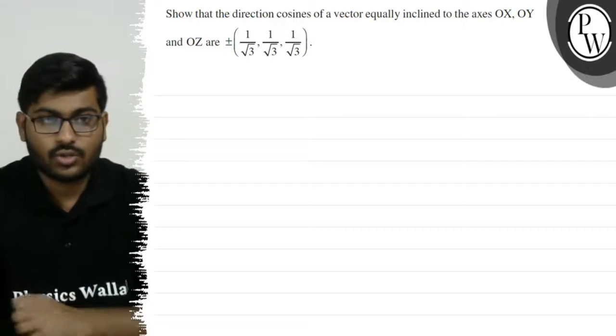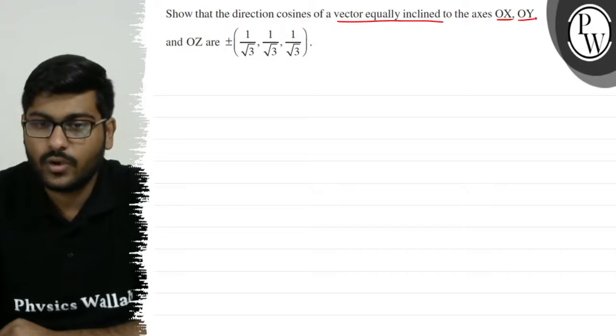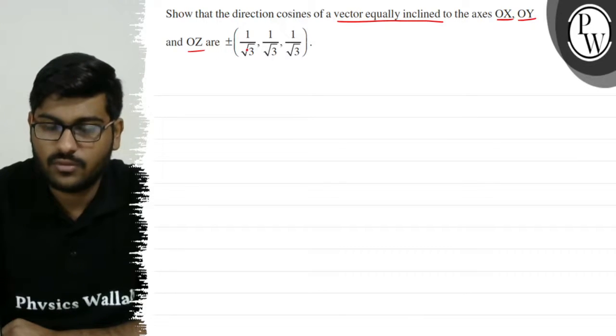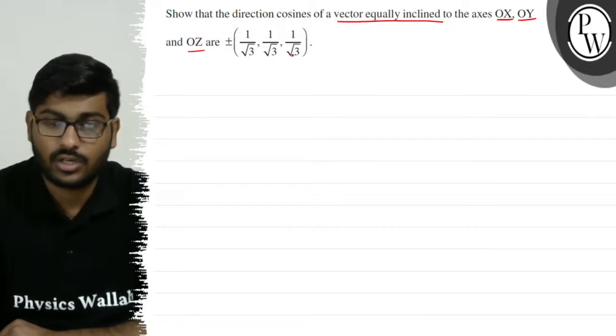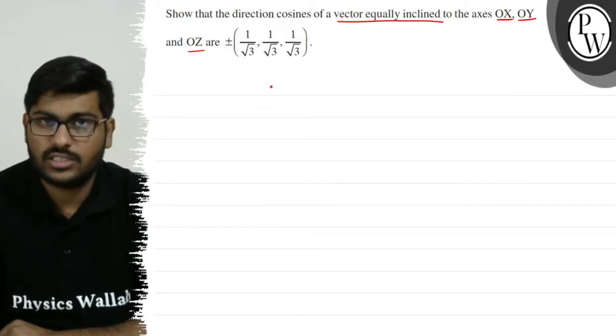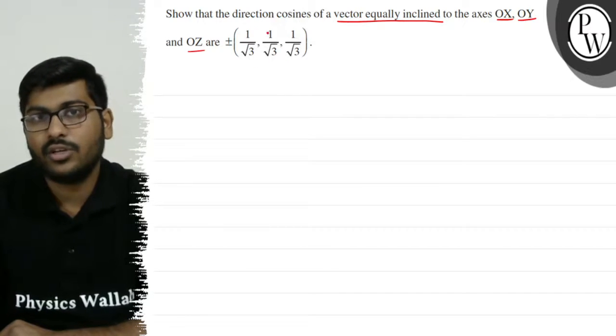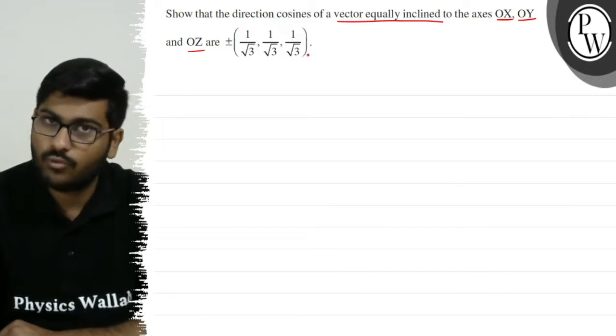Let's go to this problem. The question says that the direction cosines are equal for the x, y, and z axes. The direction cosines to x, y, and z is equal.